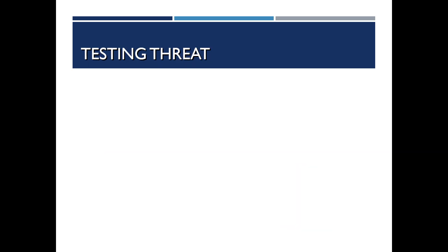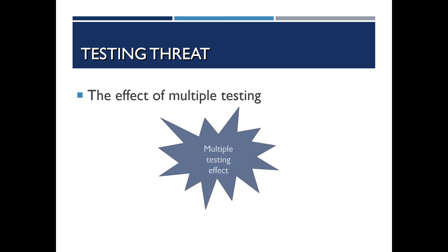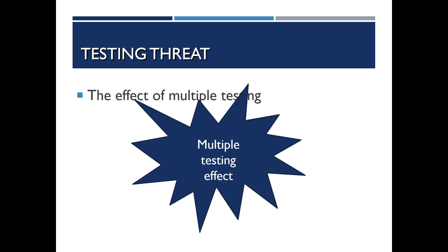The testing threat is the effect of having taken a pretest when there's a post-test — what we call the multiple testing effect. This is officially a threat to the researcher's ability to say that post-test results were due to the intervention and not just an effect of having taken the pretest previously.